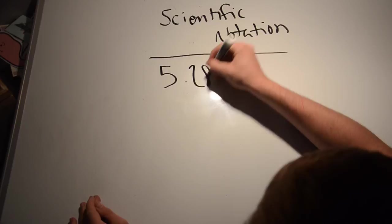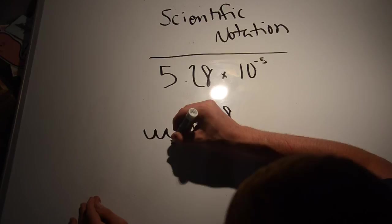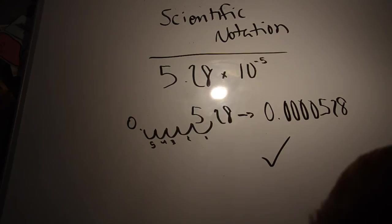Or, if you take 5.28 times 10 to the negative 5th, you move the decimal five spaces to the left and add four zeros, and you get 0.0000528.